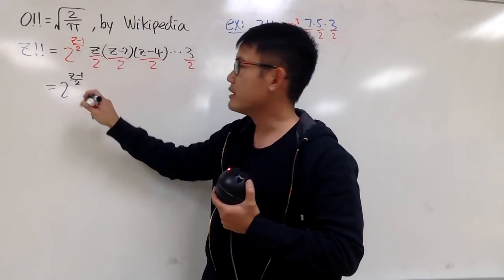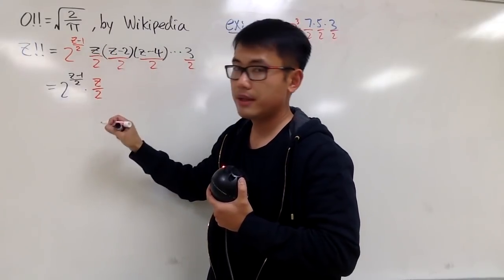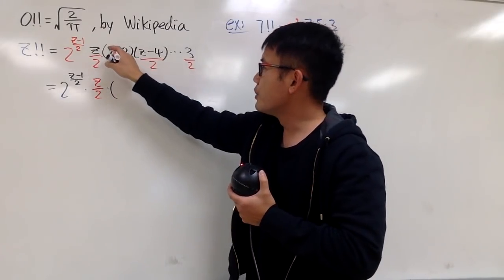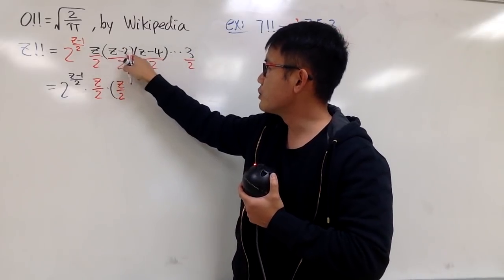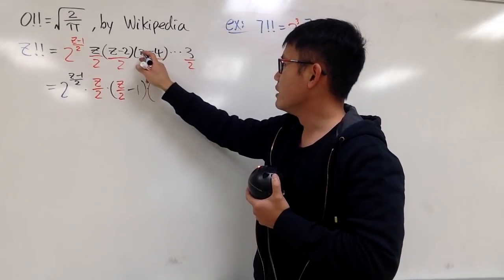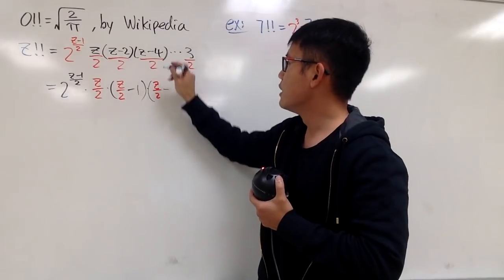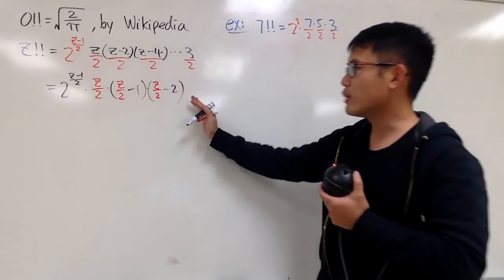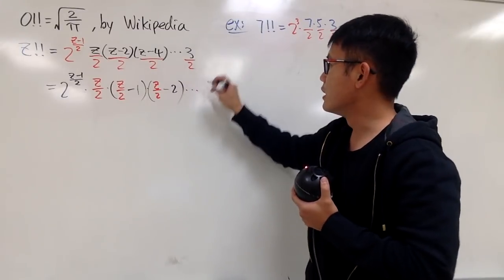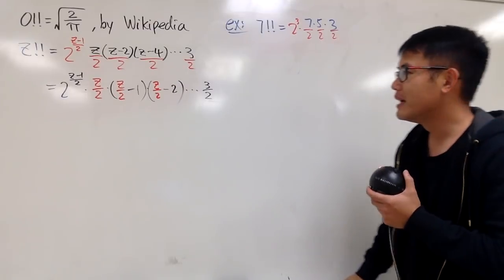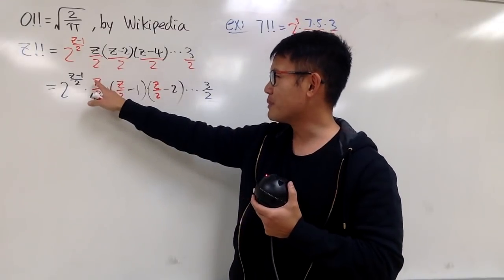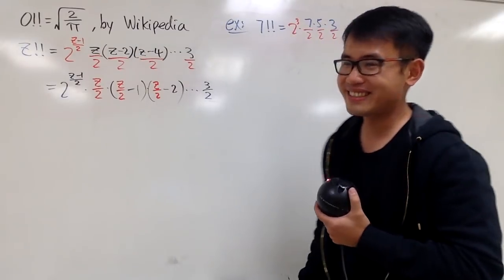The next factor is that we multiply by Z over 2, and then multiply by Z minus 2 over 2 — that's Z over 2 minus 1. Then Z over 2 minus 2, and so on, down to 3 over 2. Hopefully you see that this right here should remind you of the regular factorial, but with the input Z over 2. In order to extend the concept of the double factorial, we are going to use the gamma function. The pi function is not as famous, so we will stick with gamma.